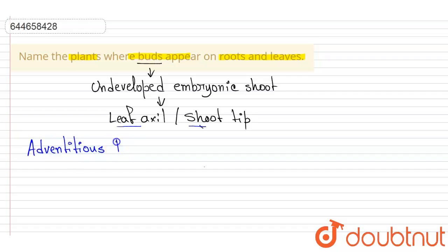Adventitious bud, and these adventitious buds appear on unexpected places. So the adventitious buds that grow on the roots are known as radical.